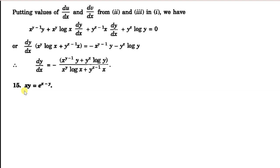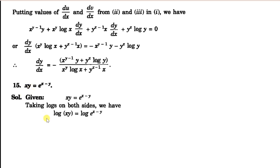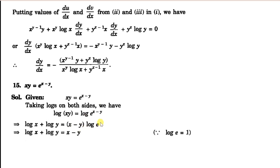The second problem is x y equal to e raised to the power x minus y. Here we take the log of both sides. On the left hand side we have a product of two terms, so log of xy equals log m plus log n gives us log x plus log y. The right hand side: log of e raised to x minus y gives x minus y times log e. Since log e equals 1, we get log x plus log y equals x minus y.